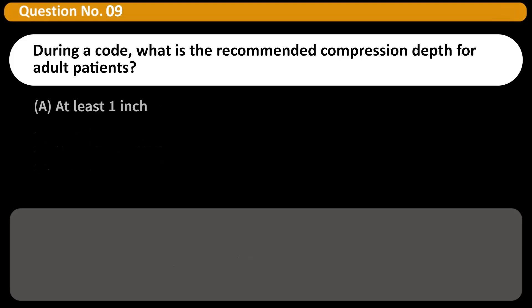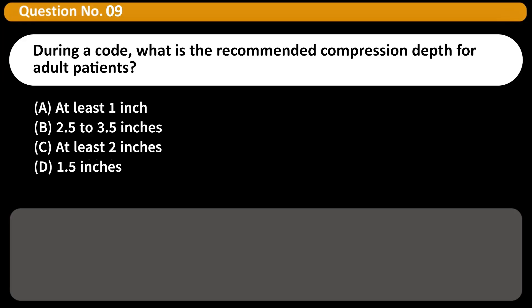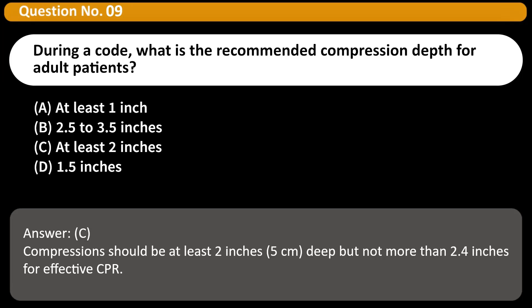During a code, what is the recommended compression depth for adult patients? A. At least 1 inch. B. 2.5 to 3.5 inches. C. At least 2 inches. D. 1.5 inches. Answer: C. Compressions should be at least 2 inches (5 centimeters) deep but not more than 2.4 inches for effective CPR.